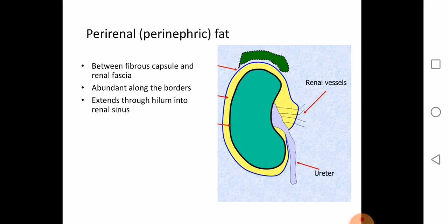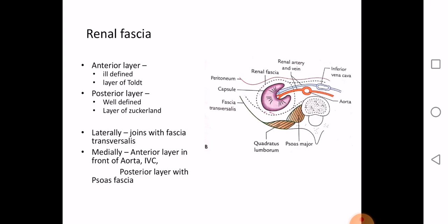The renal fascia has two layers: an anterior layer and a posterior layer. It covers both the kidneys and the suprarenal gland. The anterior layer is an ill-defined layer, also called the fascia of Toldt. The posterior layer is well defined and is referred to as the fascia of Zuckerkandl.